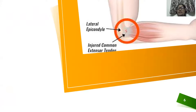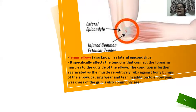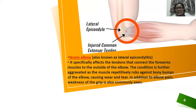One example is lateral epicondylitis — tennis elbow — which involves an injured common extensor tendon. It specifically affects the tendon that connects the forearm muscles to the outside of the elbow. The condition is aggravated as the muscle repetitively rubs against the bony bump of the elbow, causing wear and tear. In addition to elbow pain, weakness of grip is also commonly seen.